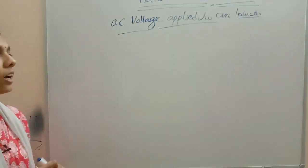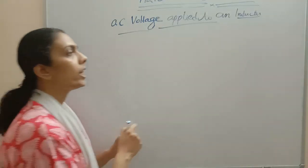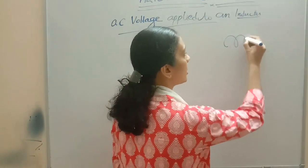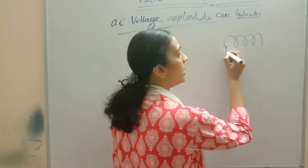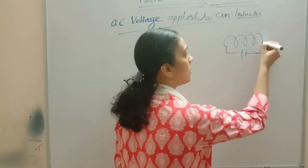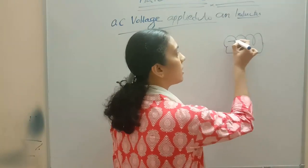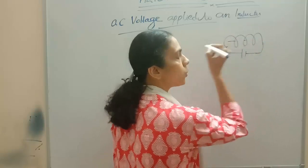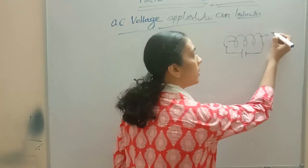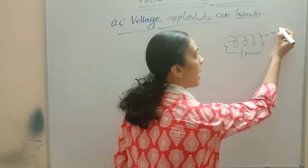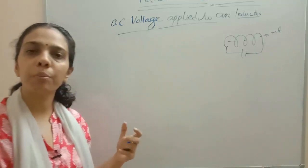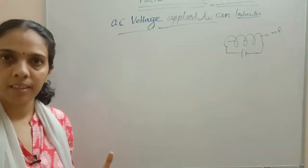Suppose a current-carrying coil is there. If current is flowing through this coil, the current-carrying coil will be having some magnetic field — it will be having some magnetic effects.